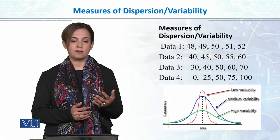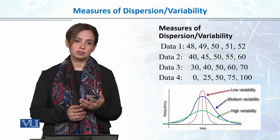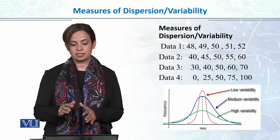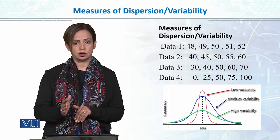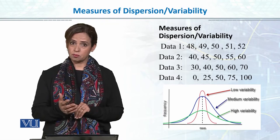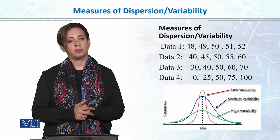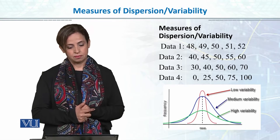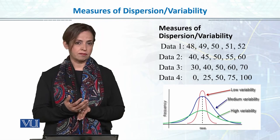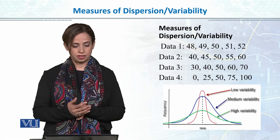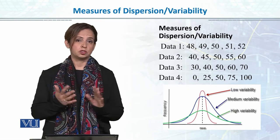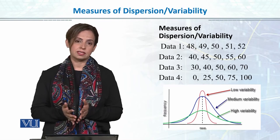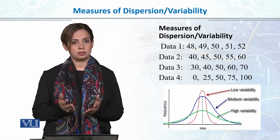In data two, there are five students with scores 40, 45, 50, 55, and 60. Since the data is symmetrical, the mean is again 50. In data three, the scores are 30, 40, 50, 60, 70, also with a mean of 50. In data four, students are scoring from 0 to 100: scores are 0, 25, 50, 75, and 100, but the mean is still 50.